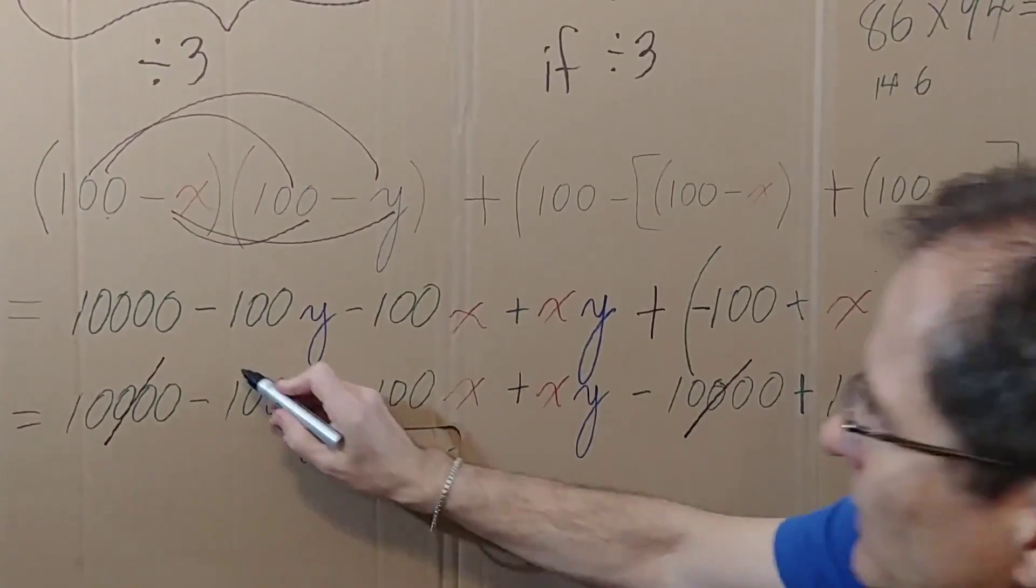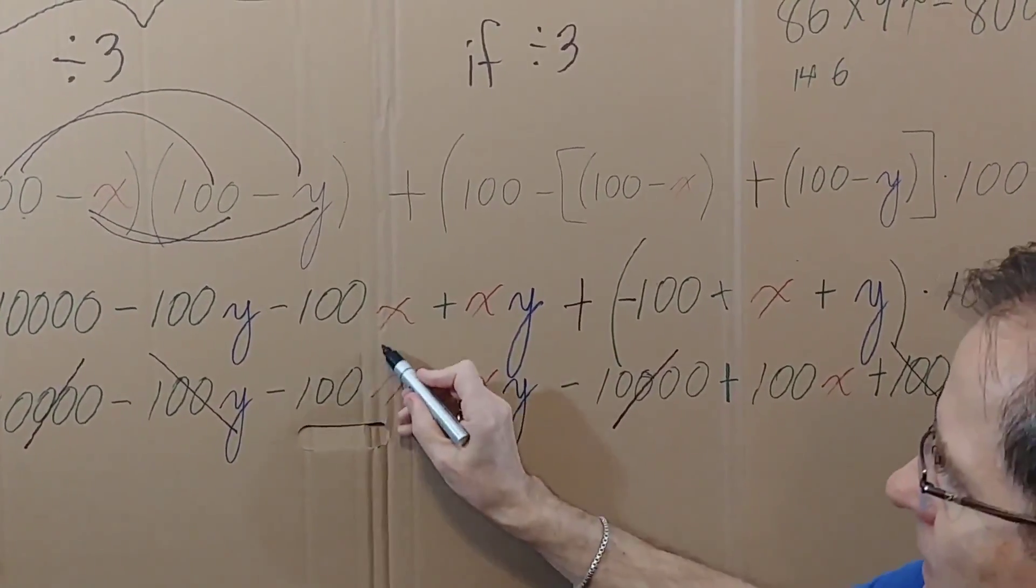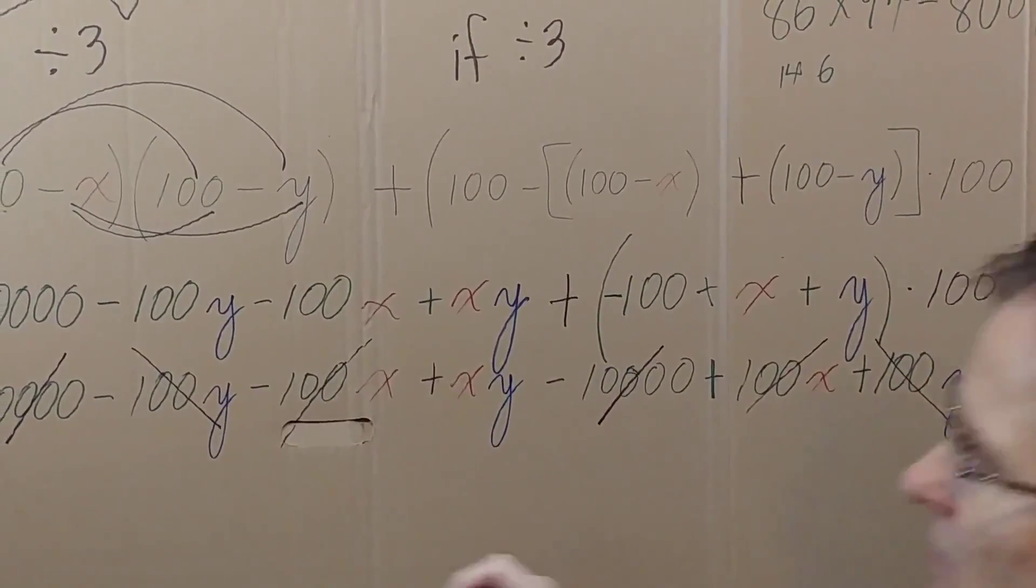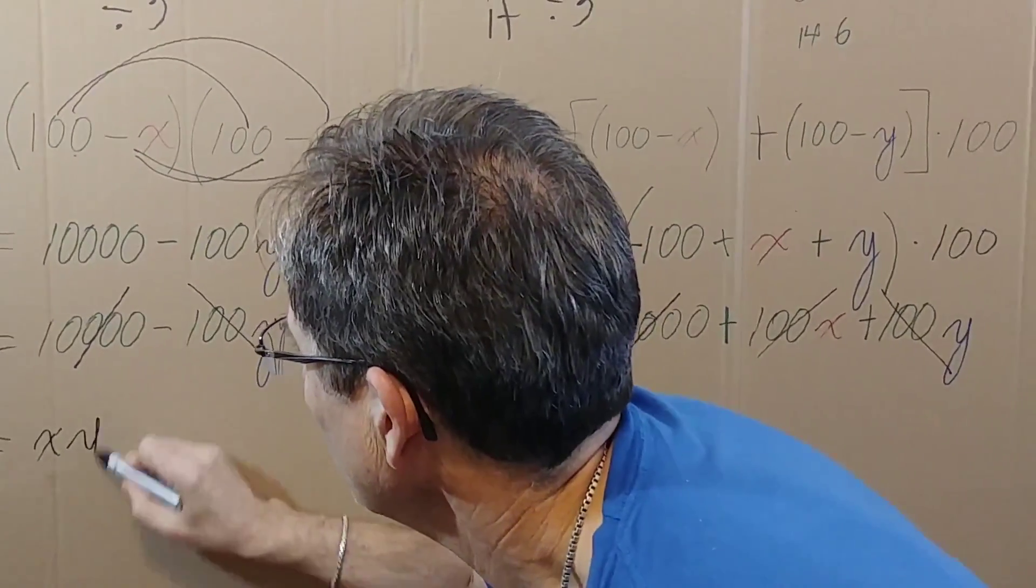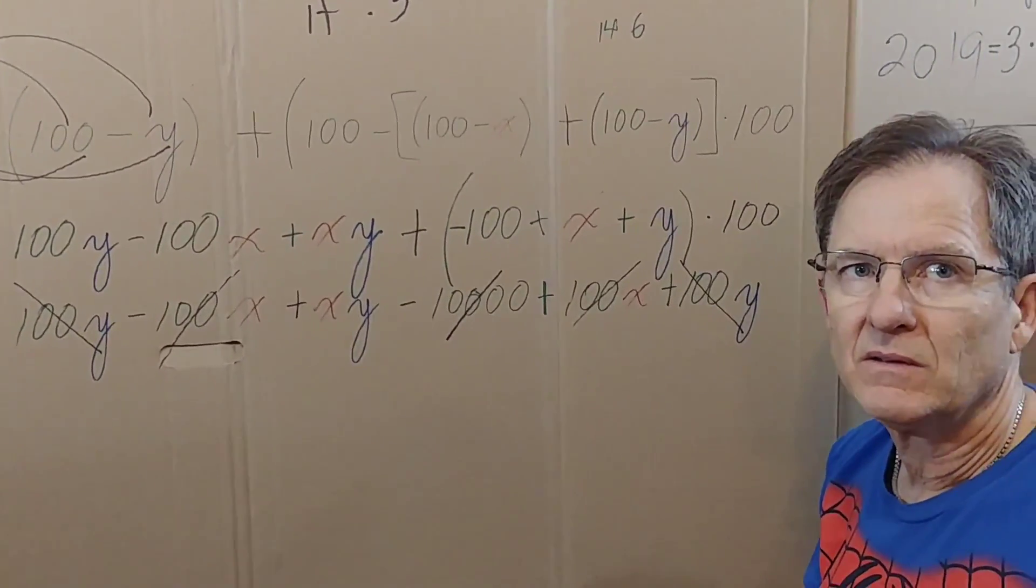The negative 100y cancels with the 100y, the negative 100x cancels with the 100x, and sure enough, as predicted, I get xy. So this works for any two numbers. Now let's do one last example that's a bit harder to see, because what if these numbers aren't close to 100?